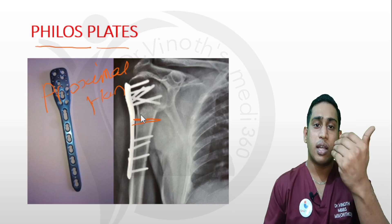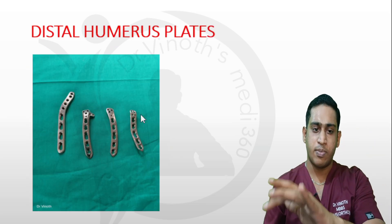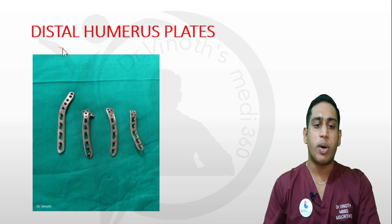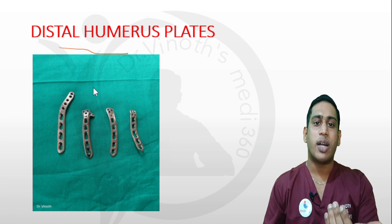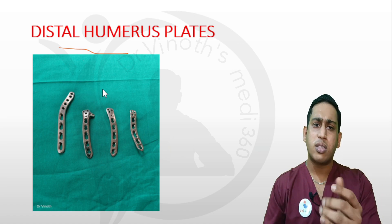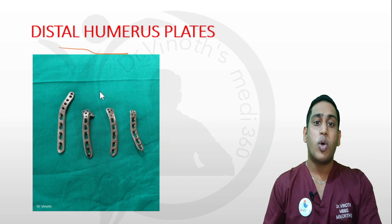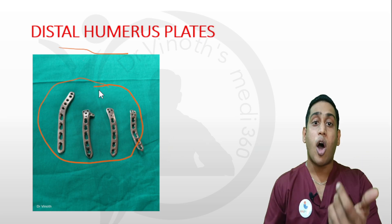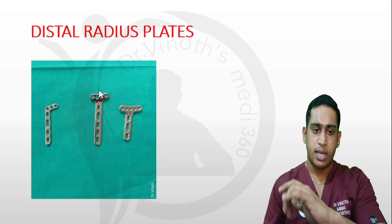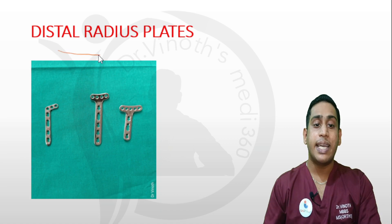For distal humerus fractures, the distal humeral region contains two condyles — lateral condyle and medial condyle — and sometimes intercondylar fractures requiring support of both medial and lateral columns. For these cases, distal humerus locking plate systems are used.